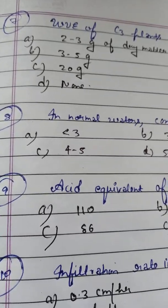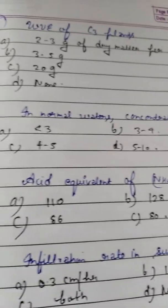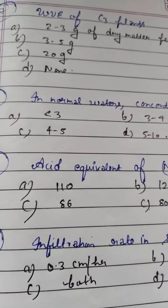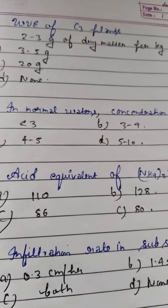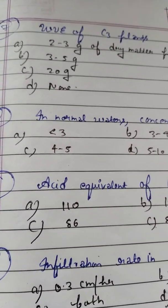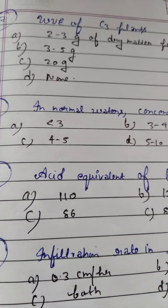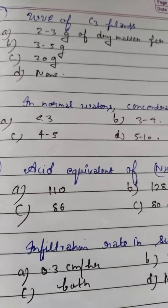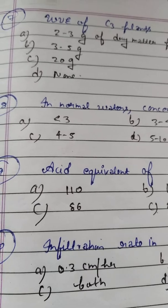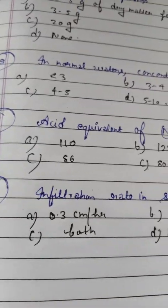Question number 7: Water use efficiency of C3 plants is — Option A: 2 to 3 grams of dry matter per kg water. Option B: 3 to 5 grams. Option C: 20 grams. The water use efficiency of C3 plants is 2 to 3 grams of dry matter per kg water. C4 plants have 3 to 5 grams, and 20 grams is the water use efficiency of pineapple, which is a CAM plant. Please remember it.